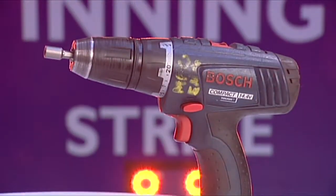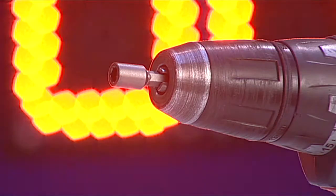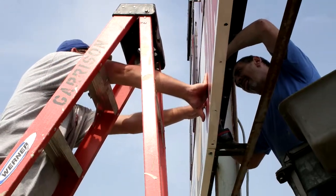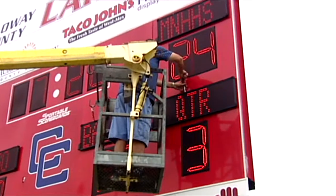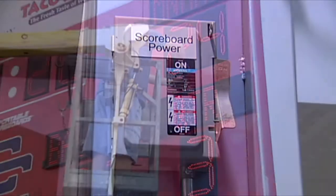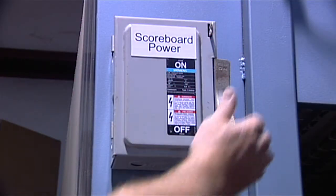The tools you will need are a cordless drill with a quarter-inch nut driver and a ladder or lift to reach and work on the scoreboard safely. Begin by turning the power to the scoreboard off.